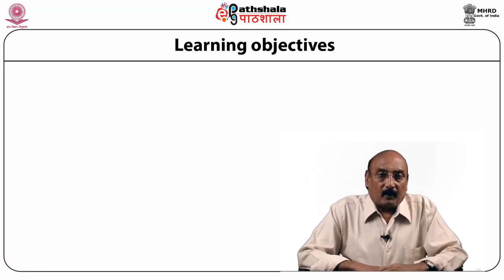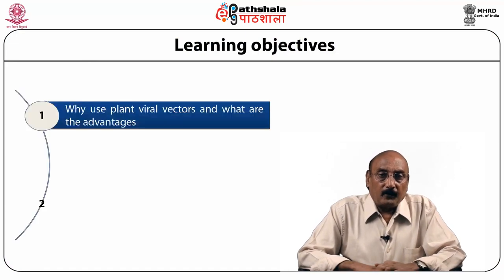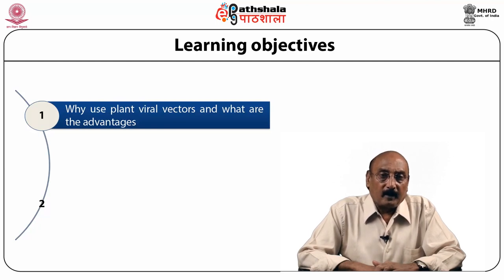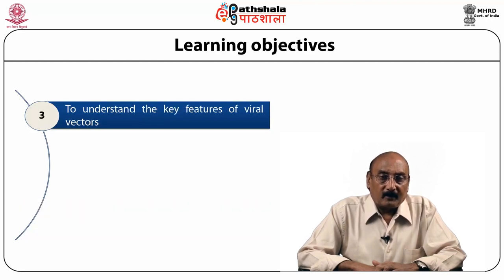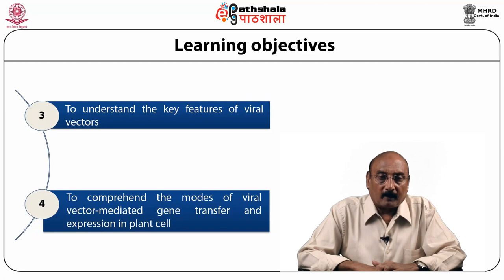The learning objectives of this module are: why we use plant viral vectors and what are the advantages of these vectors; to familiarize with the DNA and RNA viruses and how they are modified to utilize them as viral vectors; to understand the key features of viral vectors; and finally, to comprehend the modes of viral vector-mediated gene transfer and expression in plant cells.